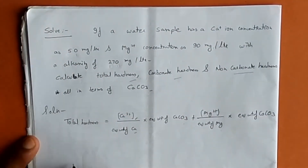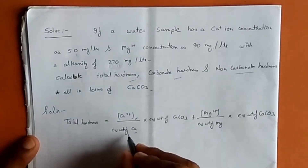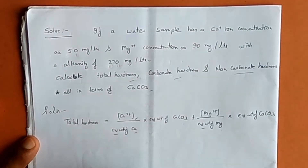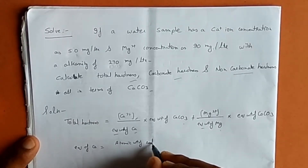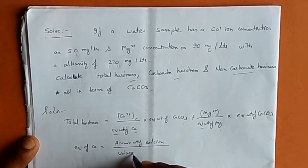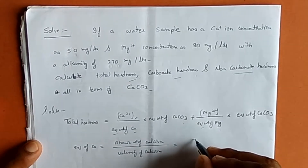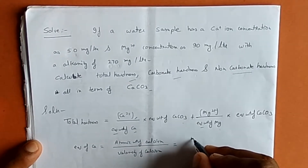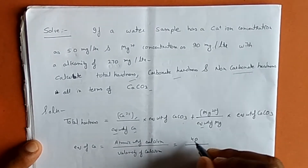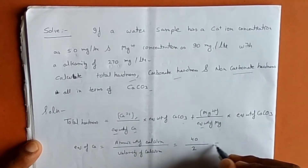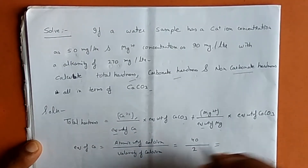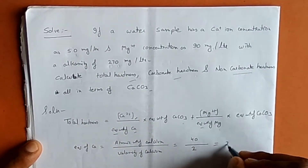We need to calculate the equivalent weight of calcium and magnesium. The equivalent weight of calcium equals the atomic weight of calcium divided by the valency of calcium. The atomic weight of calcium is 40 and valency is 2, giving an equivalent weight of calcium as 20.